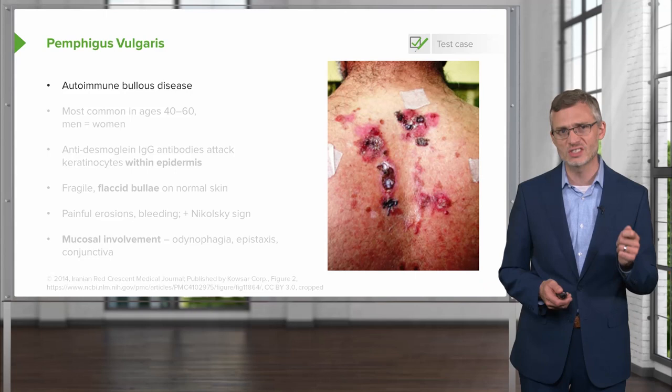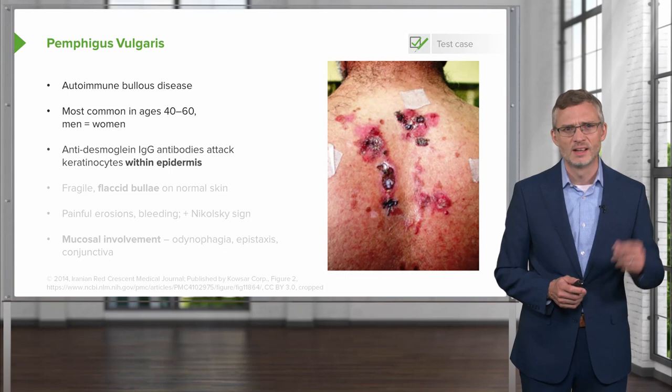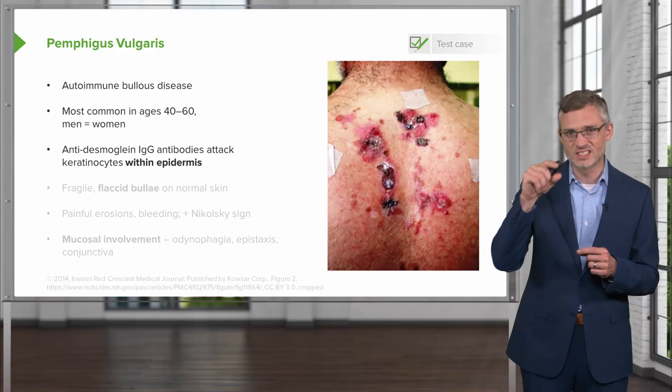It's most common in somewhat younger ages, those 40 to 60 years of age, with an equal predilection for men and for women. It is essentially caused by anti-desmoglein IgG antibodies that are attacking the keratinocytes within the epidermis. Since the epidermis itself is being attacked, it's going to break up and be thin.